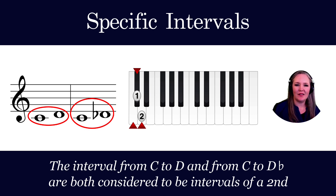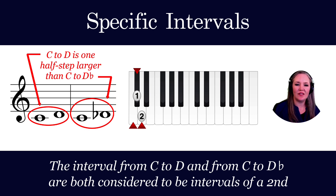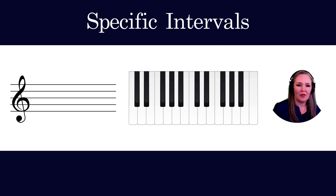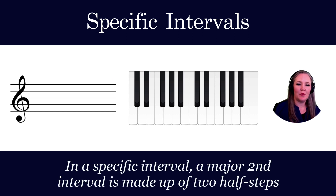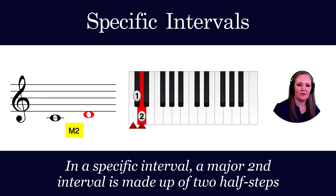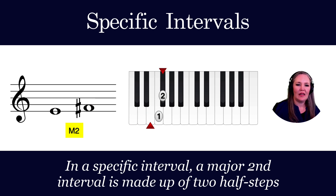C to D is one half step larger than C to D-flat. So in a specific interval, a major second is made up of two half steps. C to D is a major second since it is a generic second on the staff and two half steps on the keyboard. E to F-sharp would be another example of a major second.